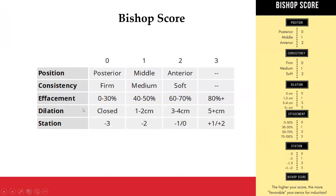These five factors are used together to come up with an aggregate value. The highest scores are given to factors that indicate a better outcome. When the position of the cervix is anterior, it scores 2. When the consistency is soft, it scores 2. When effacement is above 80%, it scores 3. When dilatation is above 5 centimeters, it scores 3. When the station is plus 1 or plus 2, meaning the fetal head is on its way out, it is given the maximum score of 3. Two factors acquire a maximum of 2 points, and three factors acquire a maximum of 3.